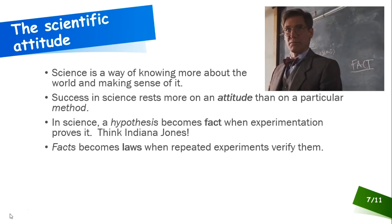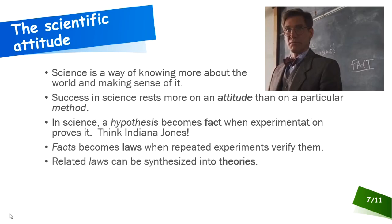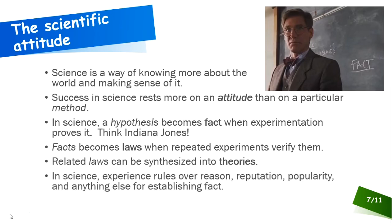Facts can then become laws when repeated experiments verify them. Other people in the scientific community conduct the same experiment, get similar results, and again confirm that the hypothesis explains the observation. So the fact becomes a law. Laws can then in turn be synthesized together, if they're related, into scientific theories. So notice the progression: we start with an educated guess — a hypothesis. It becomes a fact when experience proves it. The fact becomes a law when other people's experience verifies it. And then related laws can be synthesized together into theories. Experience is what rules the day — it rules over reason, reputation, popularity, or anything else you might use to establish a fact.